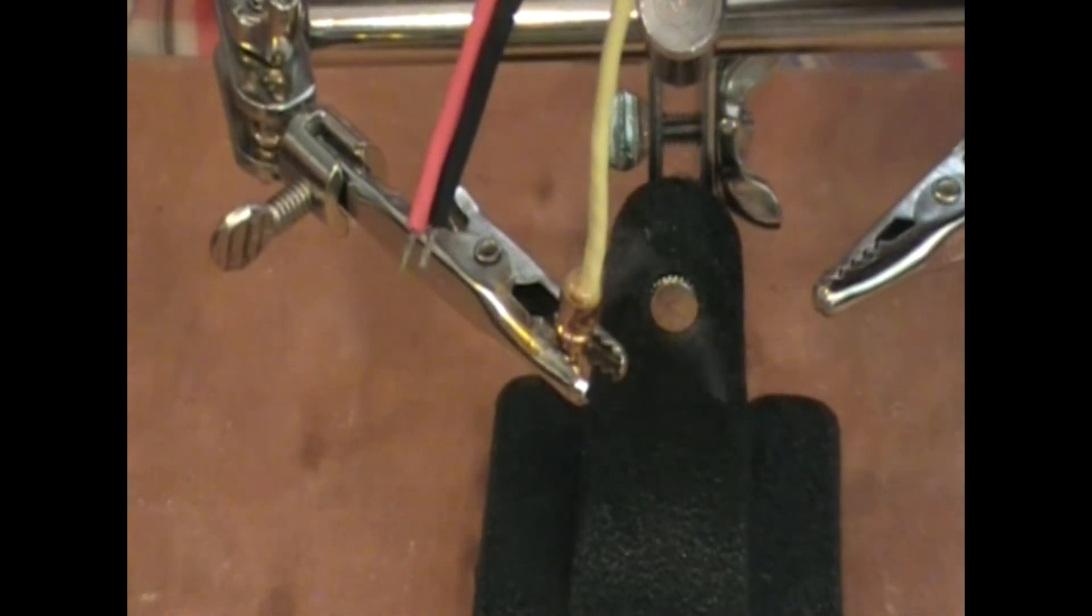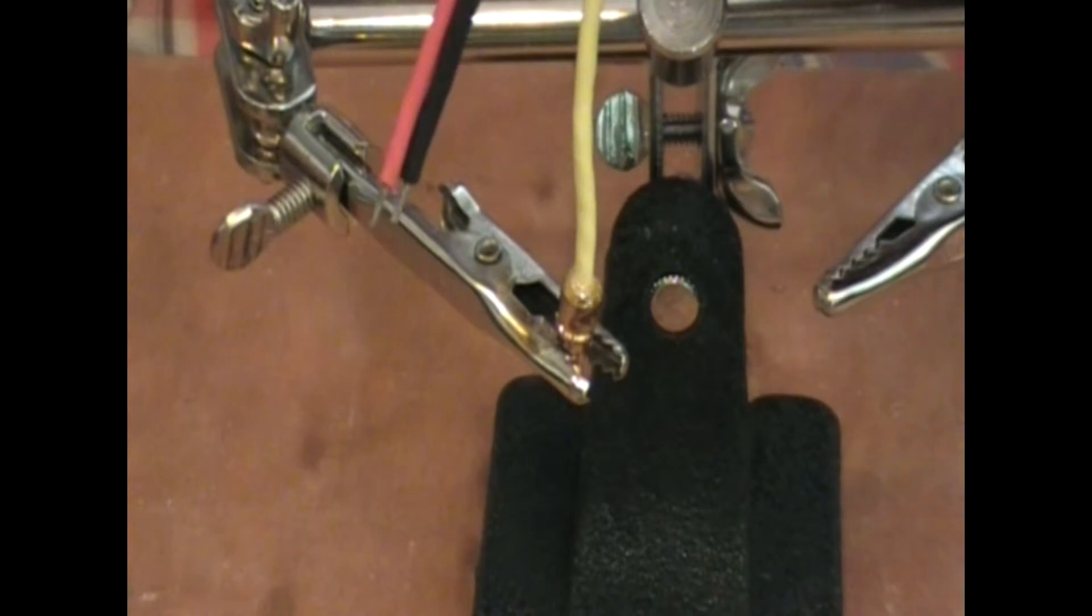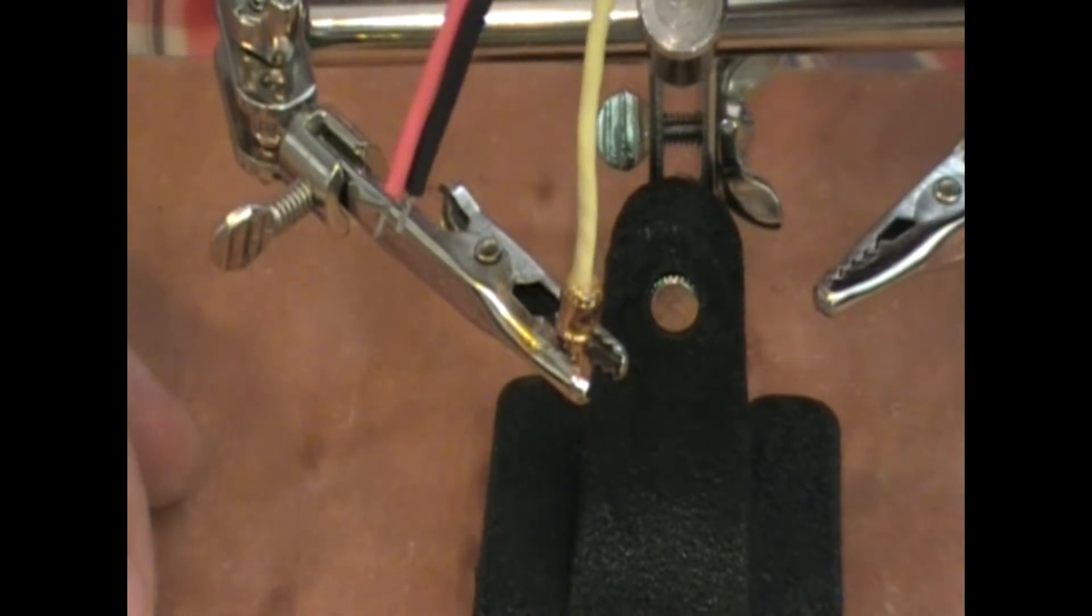Then place your wire in the connector and try to hold it as steady as possible until the solder cools. Once it's cool you can remove it from your gator clip.